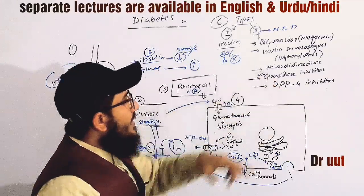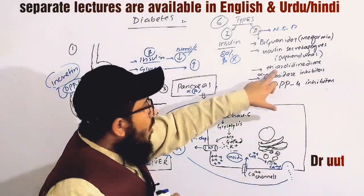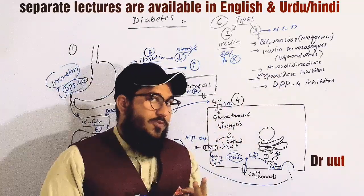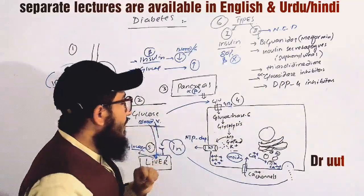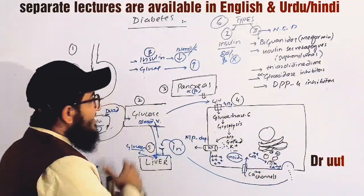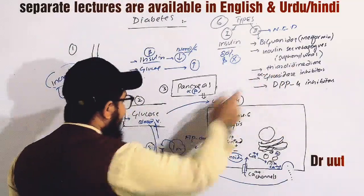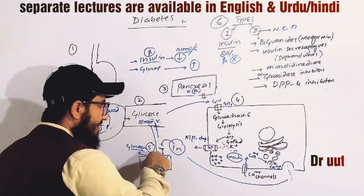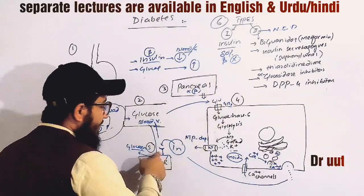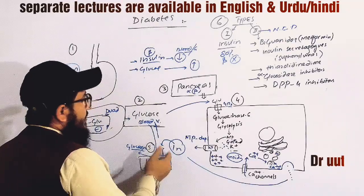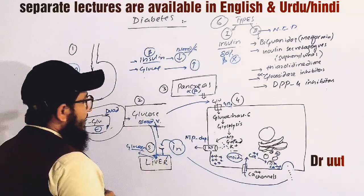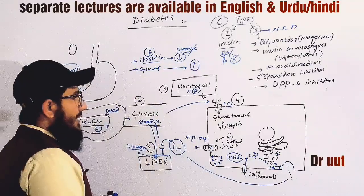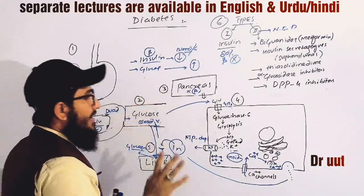We also have thiazolidinediones, whose drugs are pioglitazone and rosiglitazone, used to maintain blood sugar. Their mechanism of action is that they also activate the inactive receptors. When the receptors are activated, they again promote the absorption of glucose from the blood into the tissue, and like this, blood glucose level will be maintained.